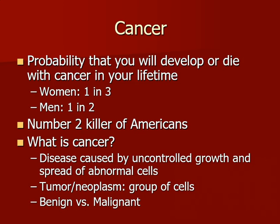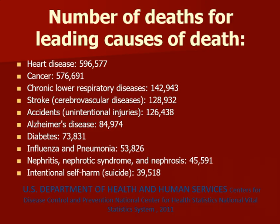So what is cancer? It's a disease caused by uncontrolled growth and spread of abnormal cells. Those cells continue to grow and spread to other parts of the body. It is a tumor or neoplasm, which is a group of cells, and it can be either benign or malignant. In terms of leading causes of death, the top two are heart disease and cancer.